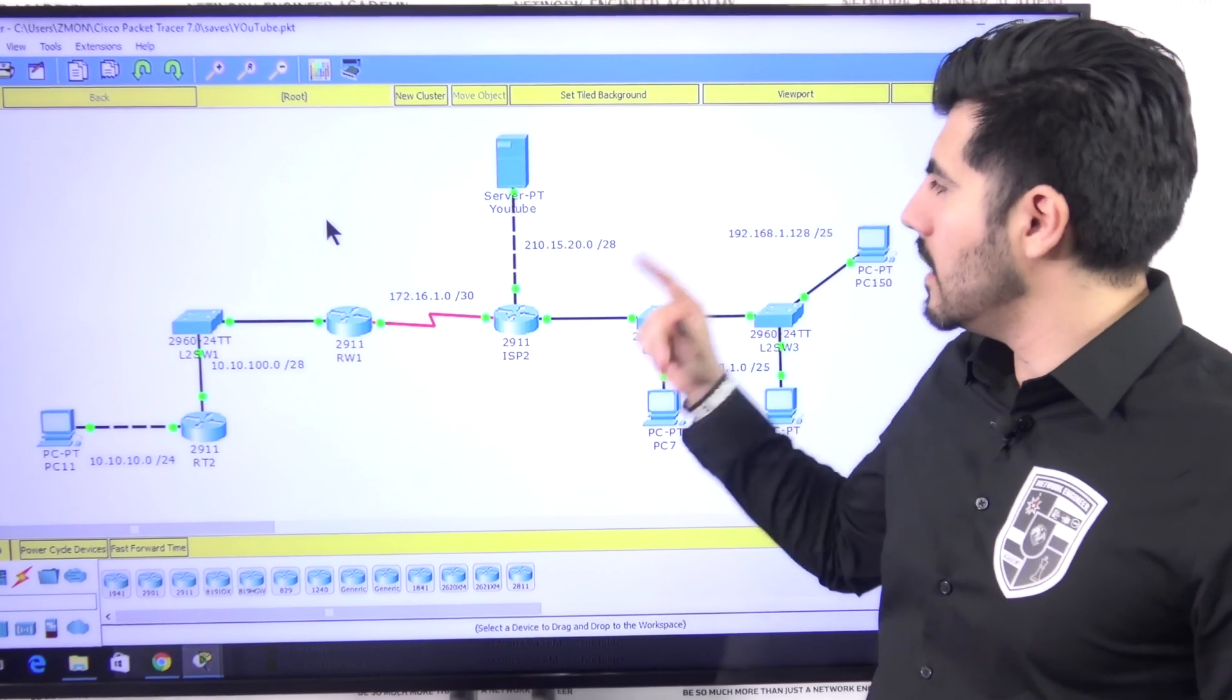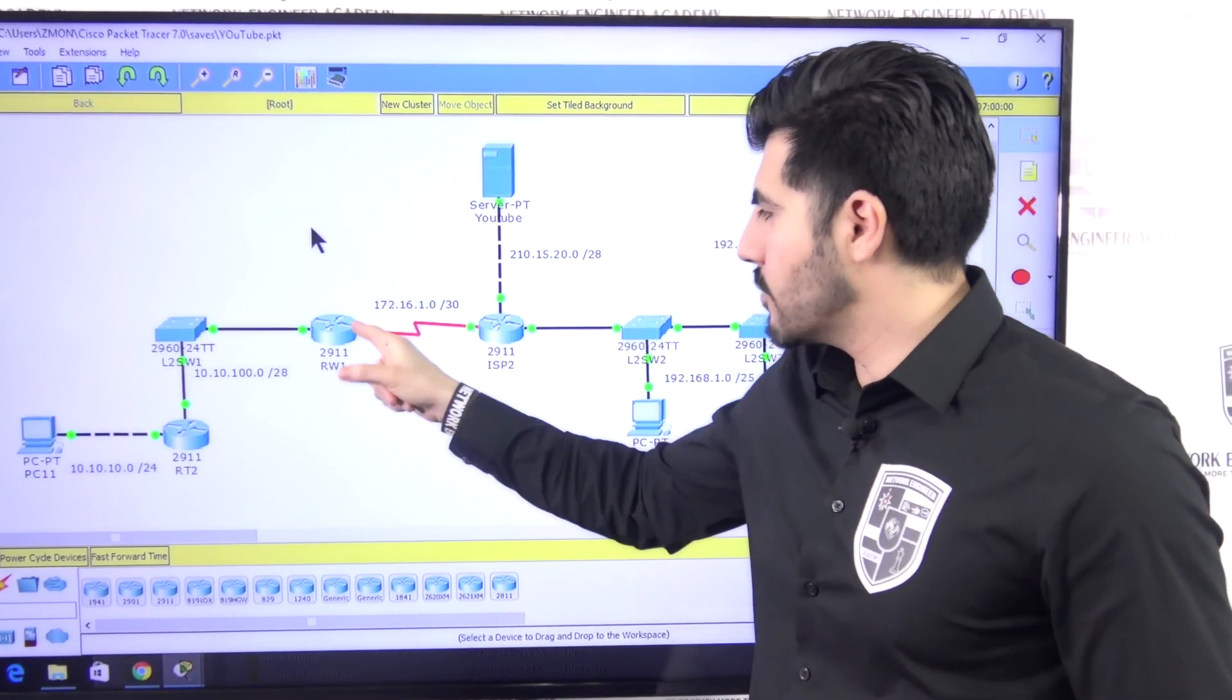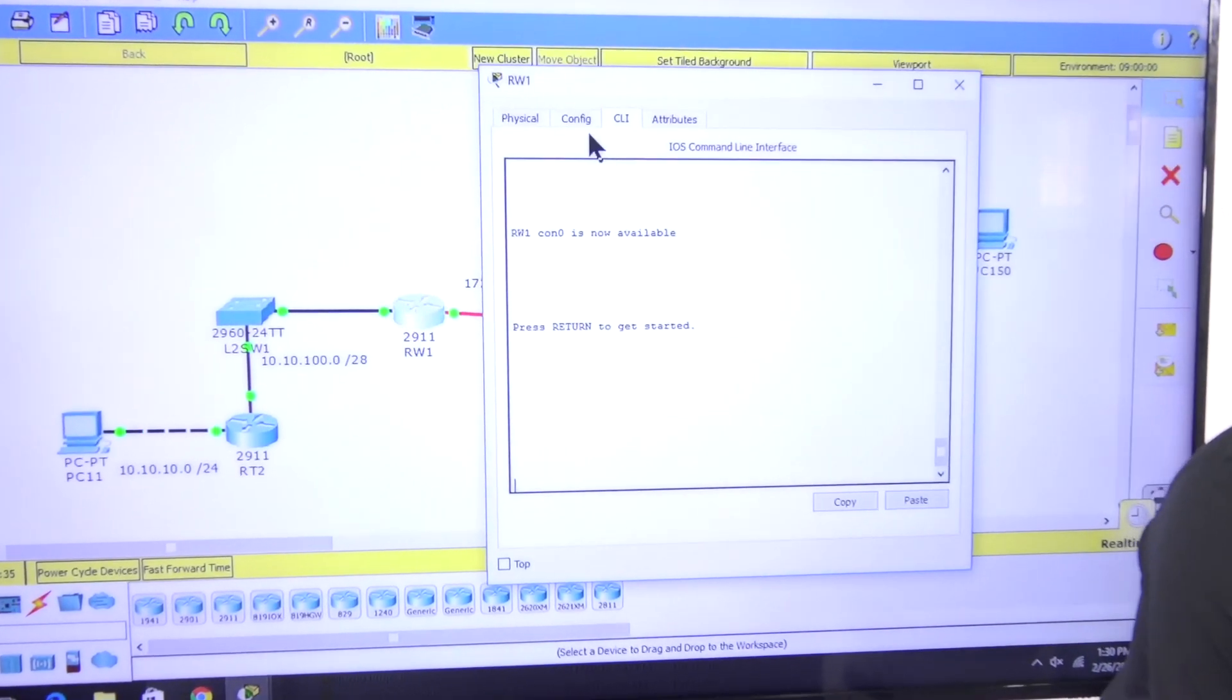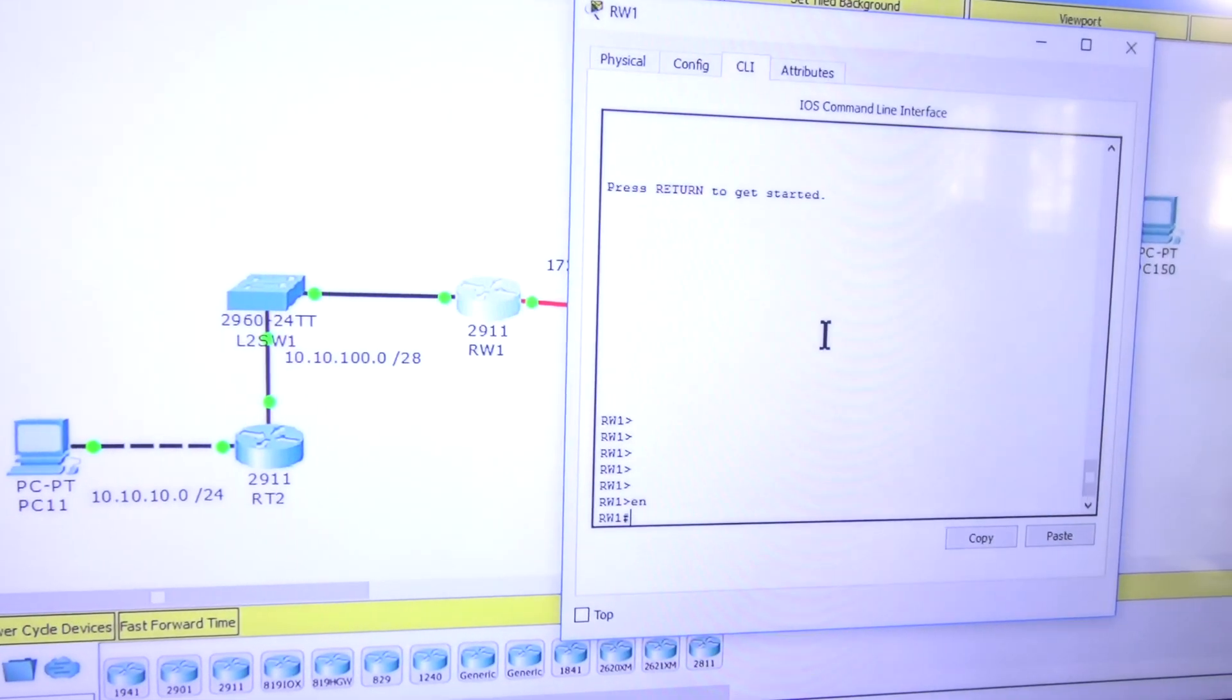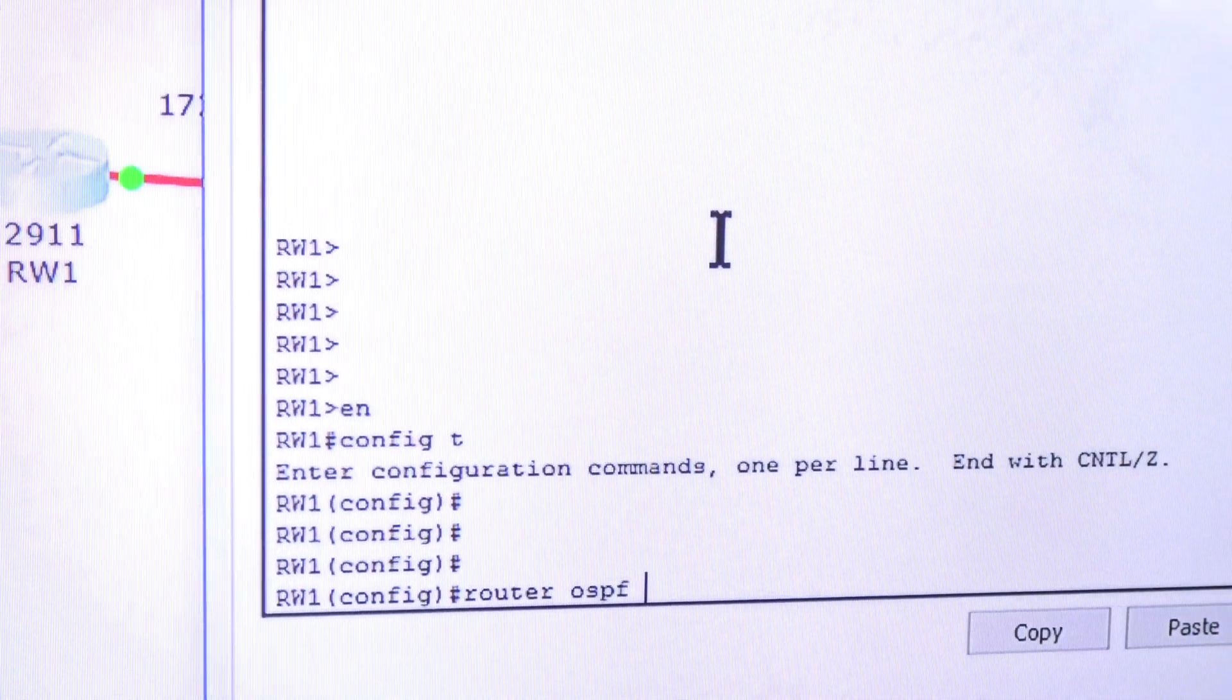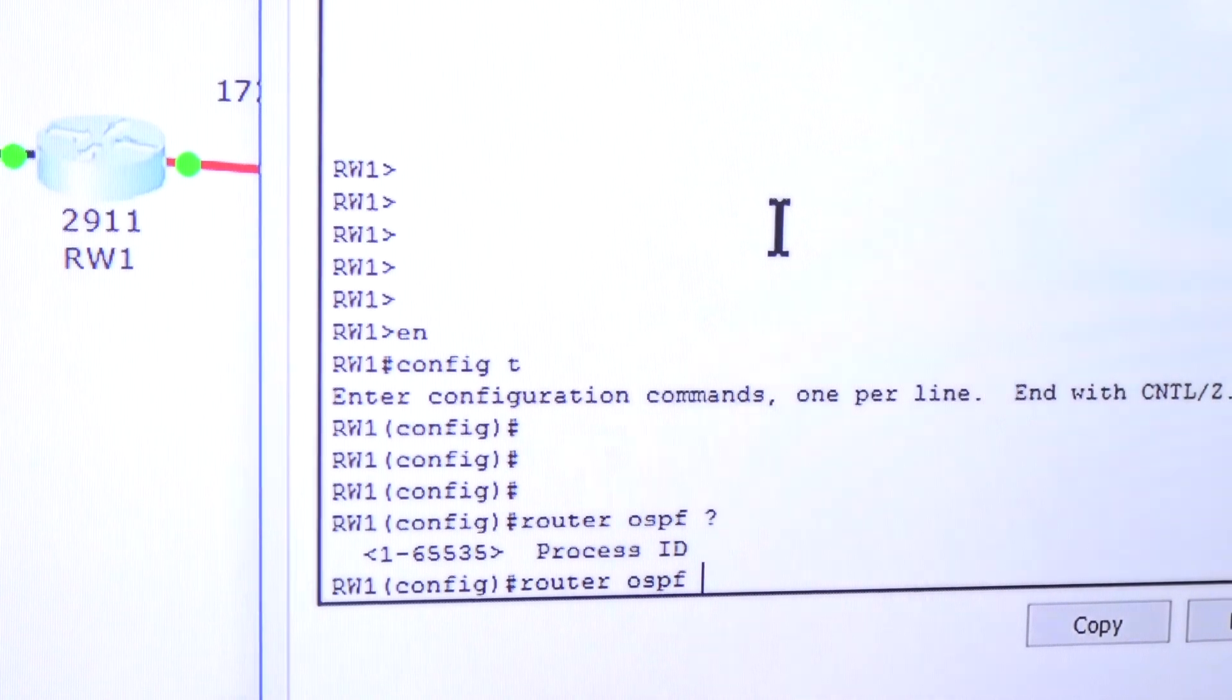So what I'm going to do is go to this router. Let me start the process. Enable. Config T. I'm going to do router OSPF, question mark. And it's going to ask me for the process ID.